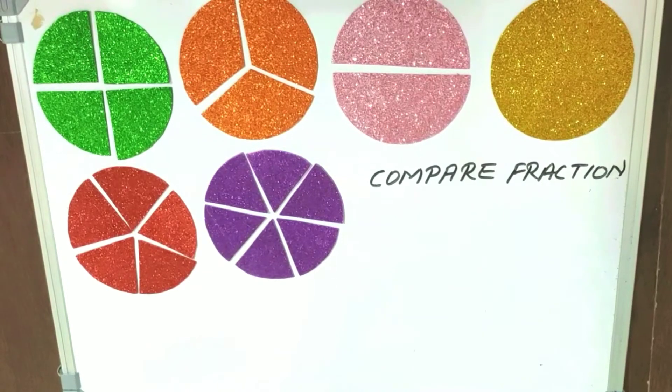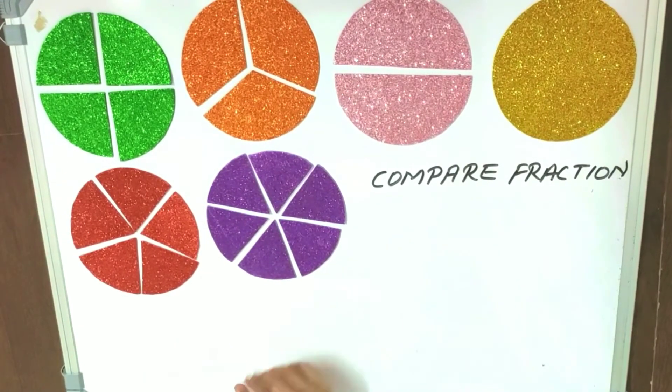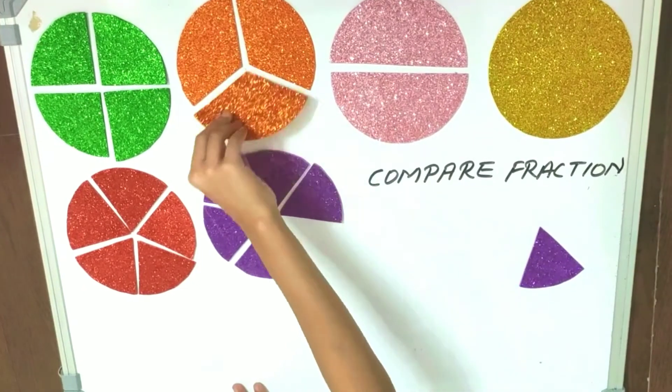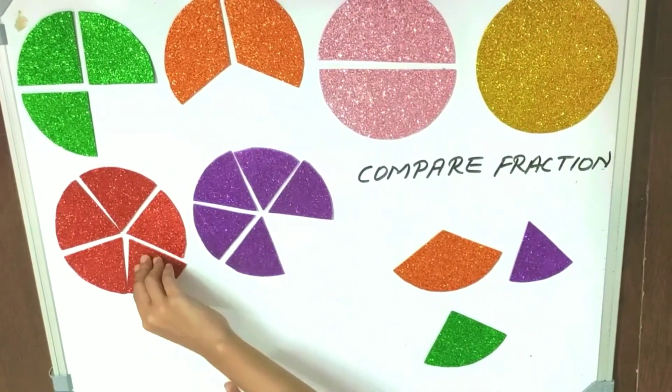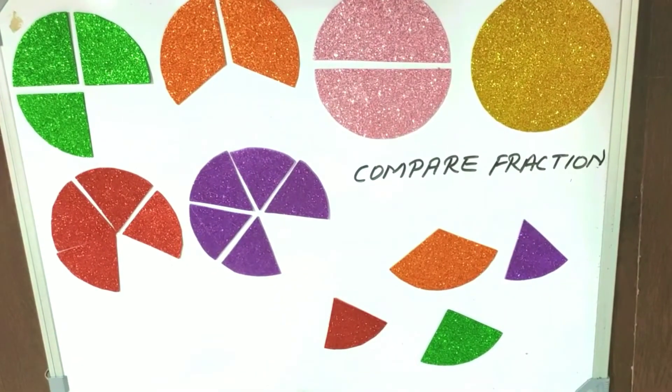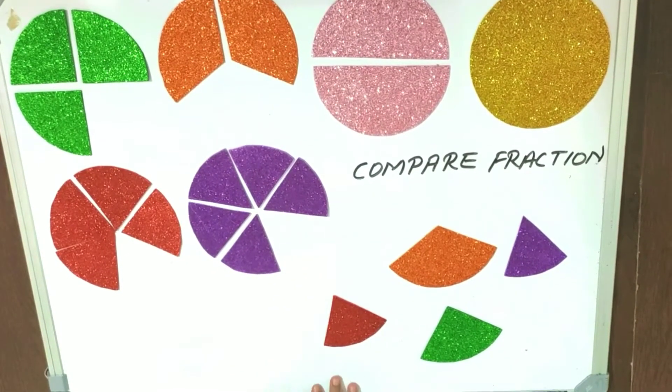Now we will compare fractions. If I take a sixth, a third, a fourth, and a fifth, here we have to arrange them from the greatest to the smallest.